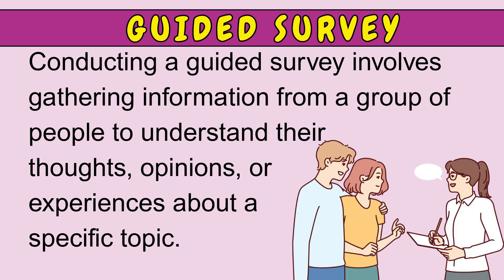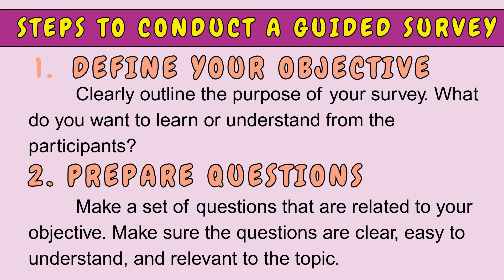Conducting a guided survey involves gathering information from a group of people to understand their thoughts, opinions, or experiences about a specific topic. Steps to Conduct a Guided Survey: Step 1 — Define your objective: clearly outline the purpose of your survey and what you want to learn from the participants. Step 2 — Prepare questions: make a set of questions that are related to your objective, and make sure the questions are clear, easy to understand, and relevant to the topic.